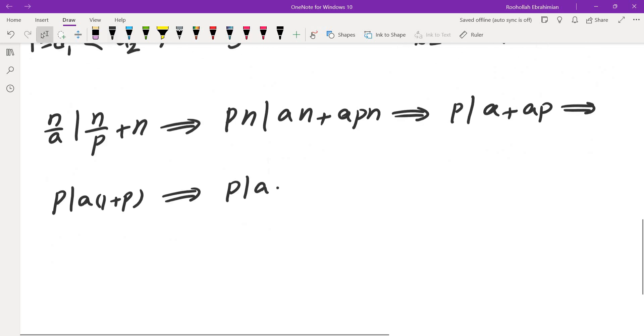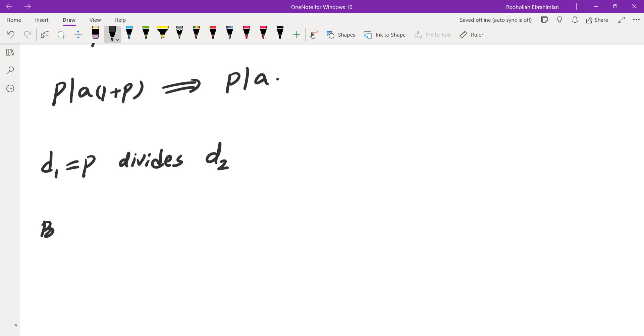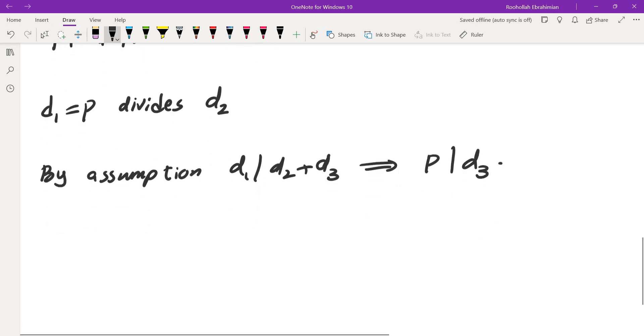Now let's start from the left side, from the smaller values. So what we know is d₁, which is p, divides d₂. But by assumption, we also know that d₁ divides d₂ plus d₃. So that means p divides d₃ as well. So p divides both d₂ and d₃.